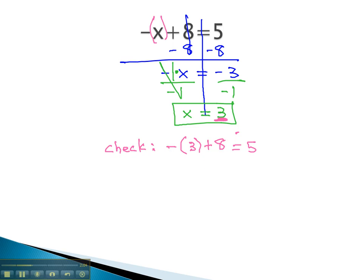is 5. Sure enough, it checks, same answer on both sides. x equals 3 must be the correct answer. The value for x that makes the original equation a true equation.